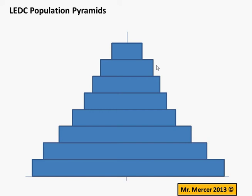Hi, and welcome to Population Pyramid Revision with Mr Mercer. What you're seeing in front of you is an LEDC's Population Pyramid. You know that because it's got a wide bottom, generally triangular shape, and a narrow top.